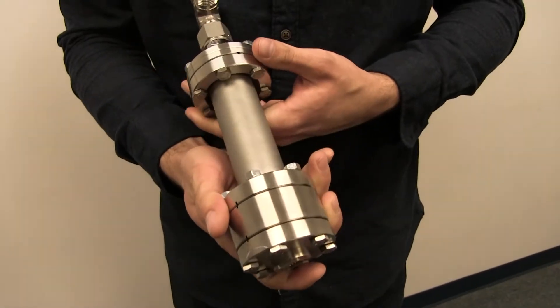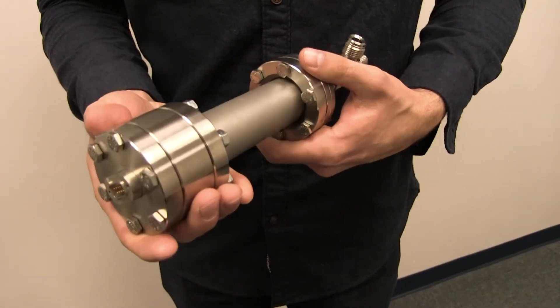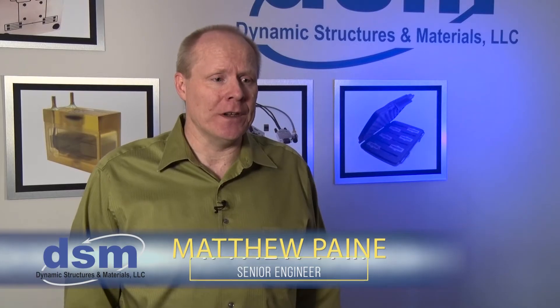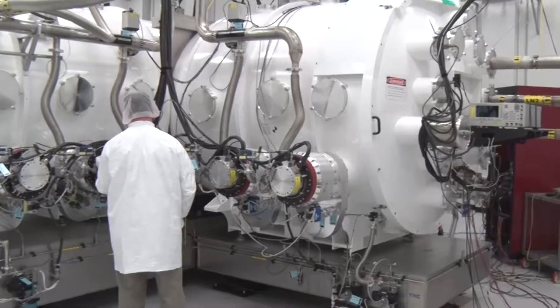The reliable cryogenic valve actuator that Dynamic Structures is developing is essentially just a valve like your faucet, your kitchen sink faucet, to control the flow of helium gas, to control the temperature inside a chamber to do testing of missile components.